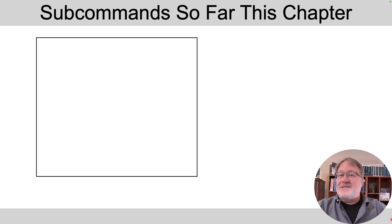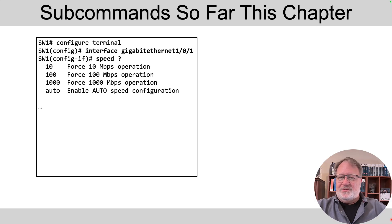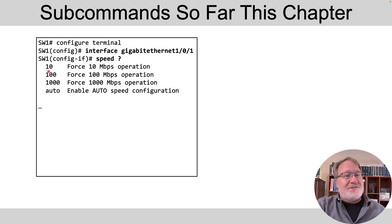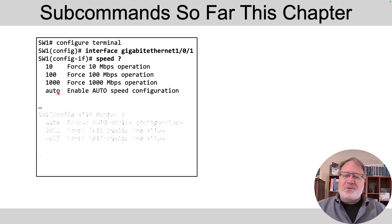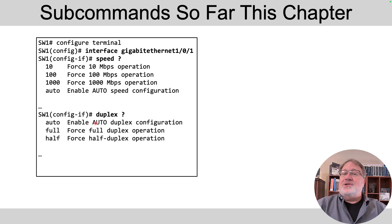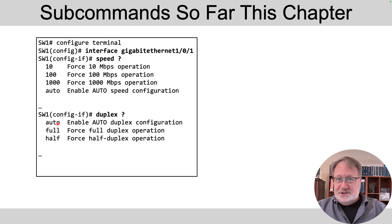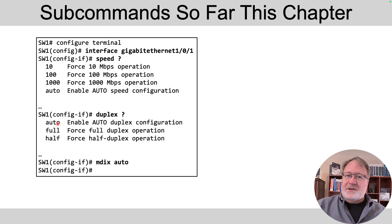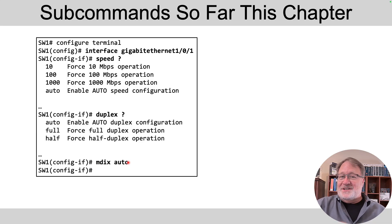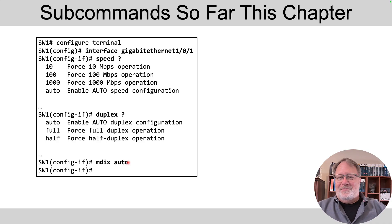First, to review, let's talk about the subcommands we've covered related to this chapter so far. There was the speed command, which on a 10/100/1000 interface had options for 10, 100, and 1000, and also auto, which is the default — meaning auto-negotiate the speed. Similarly, we have duplex, with options full, half, and auto to auto-negotiate. And in the most recent video we talked about auto-MDIX. Interestingly, the command syntax for that is 'mdix auto', which is the default, or 'no mdix auto' to disable automatic MDIX.